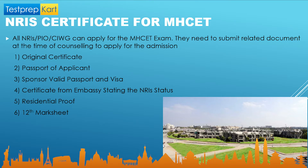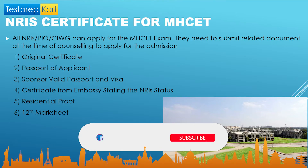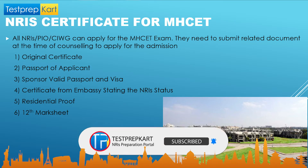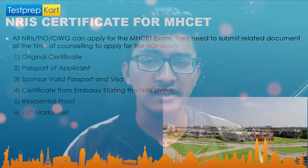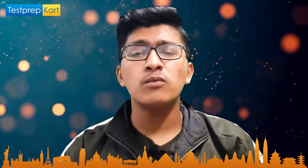The required documents include: the passport of the candidate applying, the sponsor's valid passport and visa, a certificate from the embassy stating the NRI status of the sponsor, residential proof, and your 12th mark sheet or grade sheet. These are four to five very important certificates required at different colleges under MHT-CET for NRI or PIO admissions.